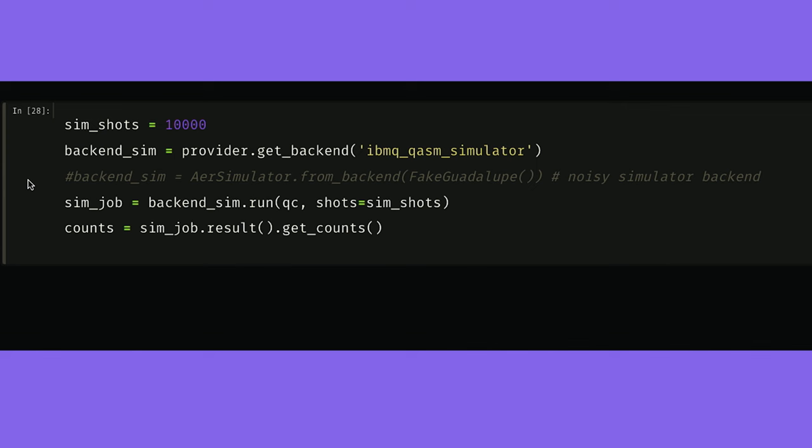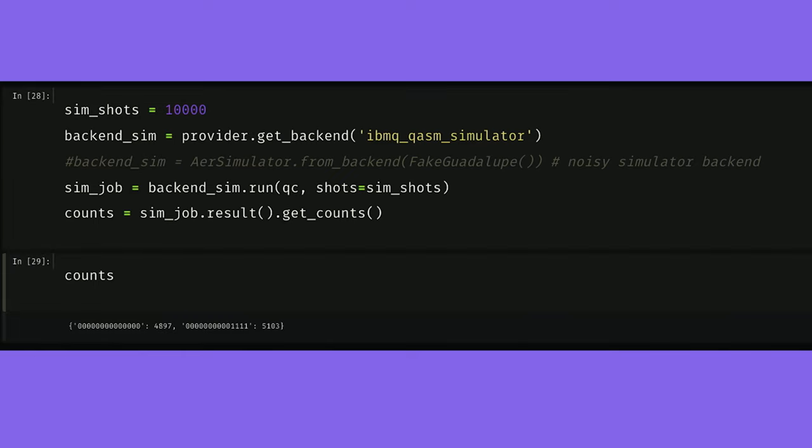Now let's look at the counts we got back, and we can see indeed that we measured our 0000 or 1111 corresponding to the four qubit GHZ state, and we see that we incurred no errors because all the other digits are zero.